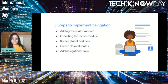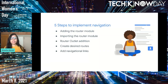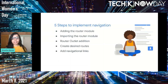There are basically five steps in setting up the routing module. First, adding the routing module inside our Angular application. Second, importing the added router module. Third, adding the router outlet. Fourth, creating the desired routes for all the links in the web application. And finally, adding the navigational links using which users will navigate to different pages.